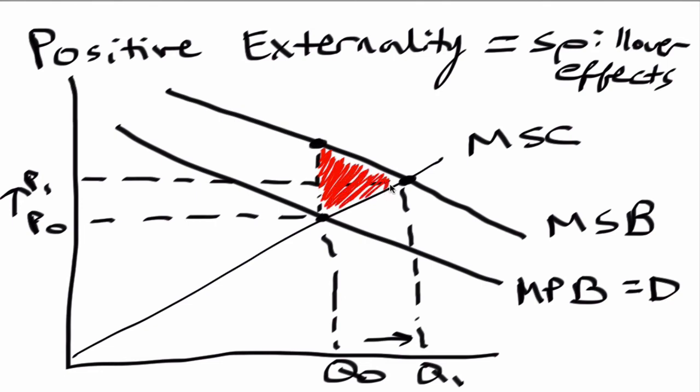So you may be asking yourself, okay, so we have this deadweight loss, how do we fix this? How do we shift our overall demand curve outward to meet that marginal social benefit curve? Well, the way to do that is a lot of governments will choose to subsidize.